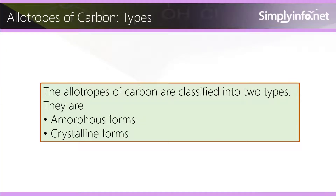The allotrophs of Carbon are classified into two types: amorphous forms and crystalline forms.